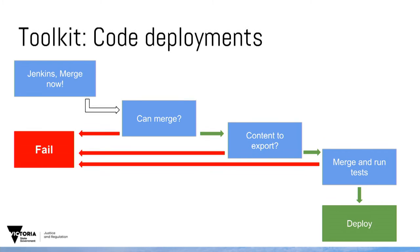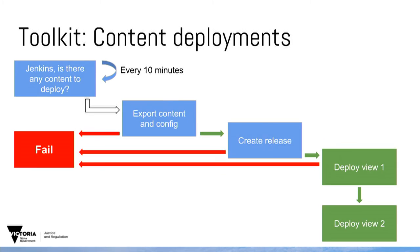That's how we manage feature releases. What about content? Every 10 minutes, Jenkins checks the same health check — is there any content to deploy? If there is, we export it, and also the config, because we allow site owners to edit some config. We've got that in the code base, create a release, push it to Git, then do a blue-green swap with the view servers, deploying one at a time, and we've got the new content live.